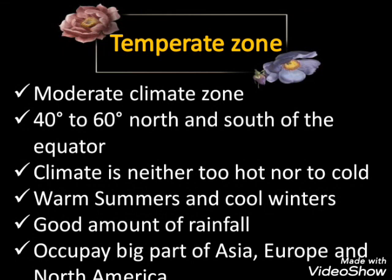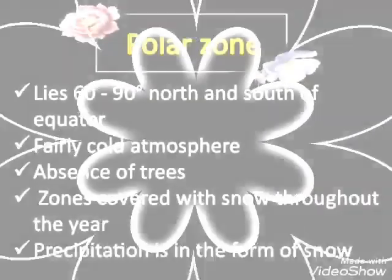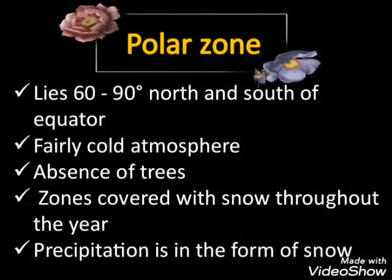The temperate zone is a moderate climate zone found between 40 degrees to 60 degrees north and south of the equator. These regions are neither too hot nor too cold. They have warm summers and cool winters, with a good amount of rainfall, balanced winds, and temperature. The temperate zone occupies a large part of North America, Europe, and Asia.